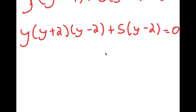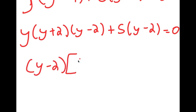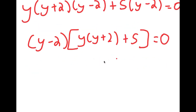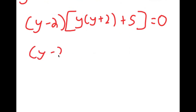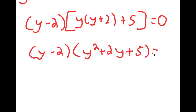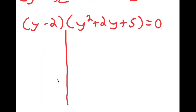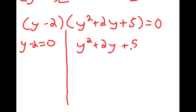The common factor for all terms is y minus 2. So I have y minus 2 times y times y plus 2 plus 5, which simplifies to y minus 2 times y squared plus 2y plus 5 is equal to 0. This gives me two equations: y minus 2 equals 0, and y squared plus 2y plus 5 equals 0. For y minus 2 equals 0, y is obviously equal to 2. For y squared plus 2y plus 5 equals 0, I'll use the quadratic formula: negative b plus or minus square root of b squared minus 4ac, all over 2a.